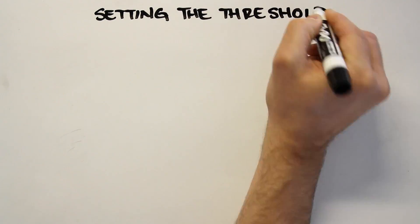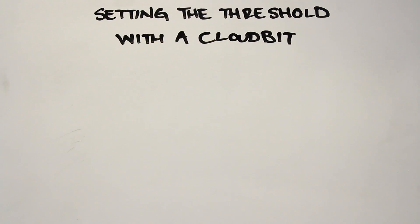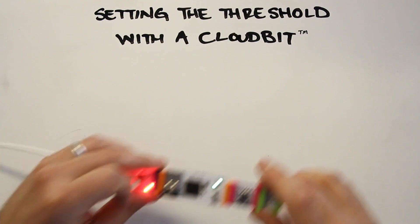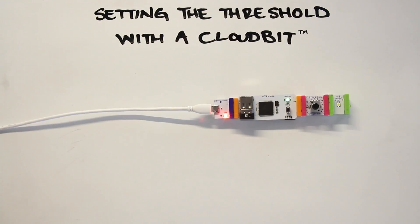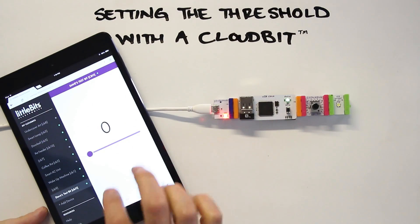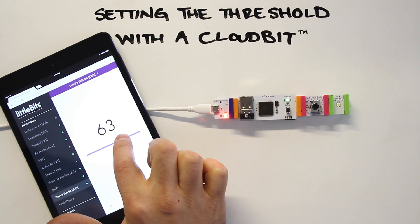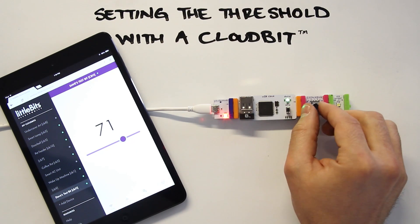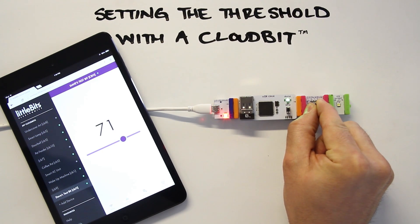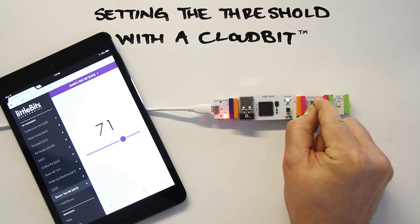You can also set your threshold using a cloudbit. To do this, swap out the dimmer and the number module for a cloudbit and use the slider on cloud control to set the number to your desired level. Then, just turn down the threshold as in the previous example until the LED lights up.